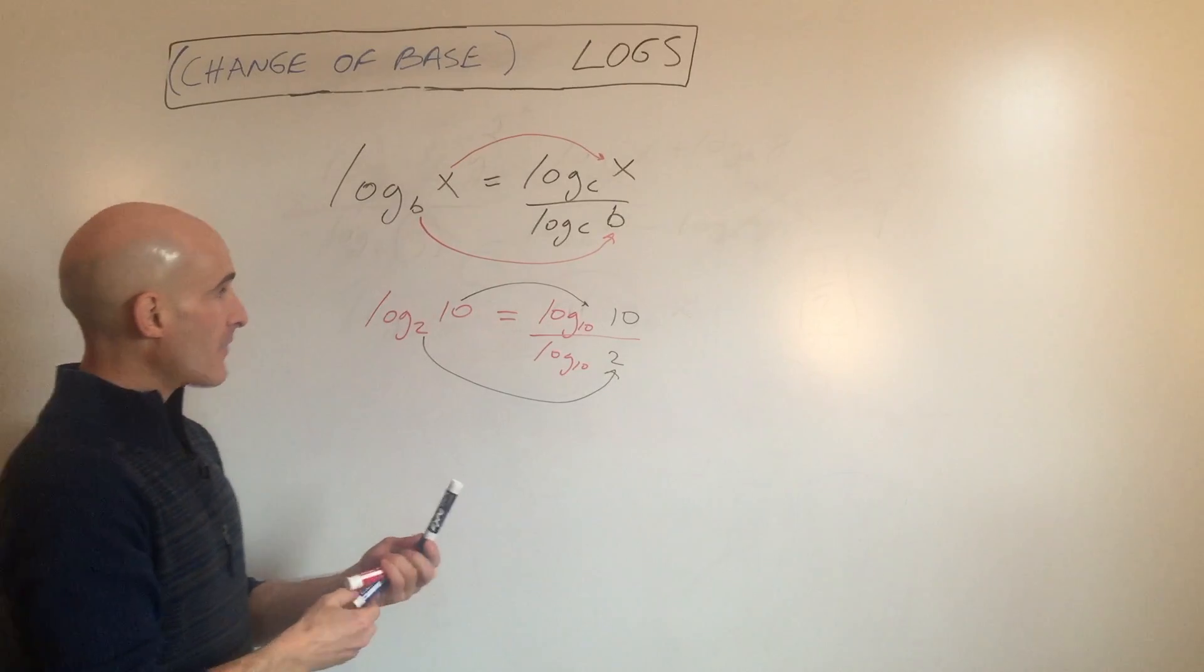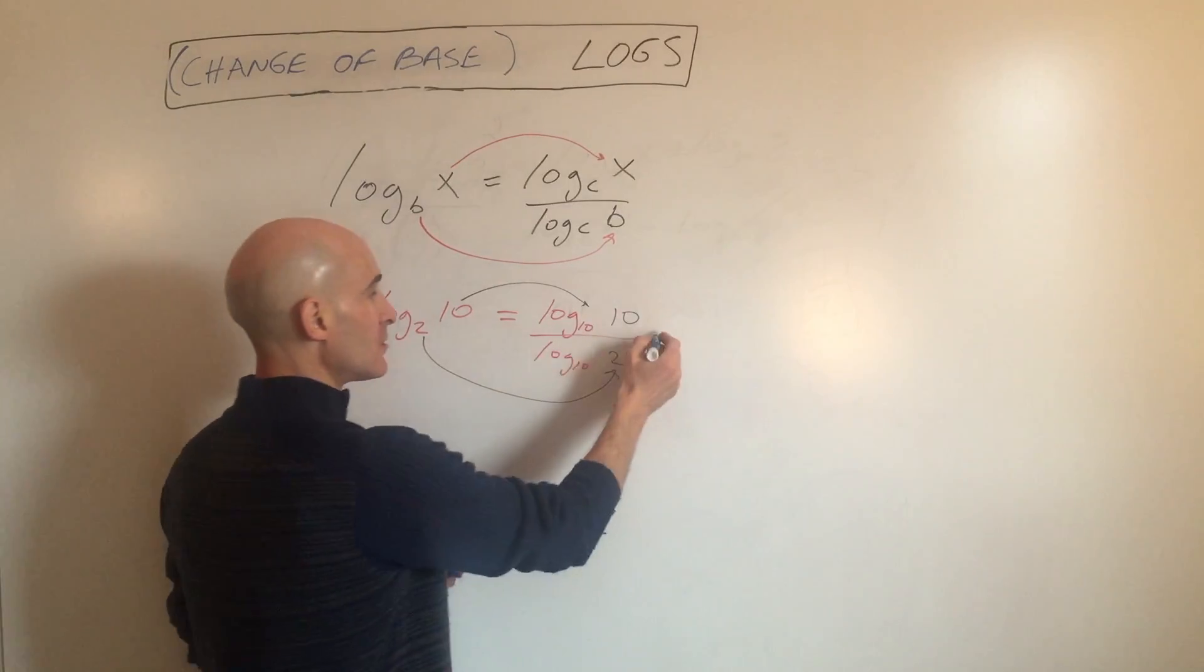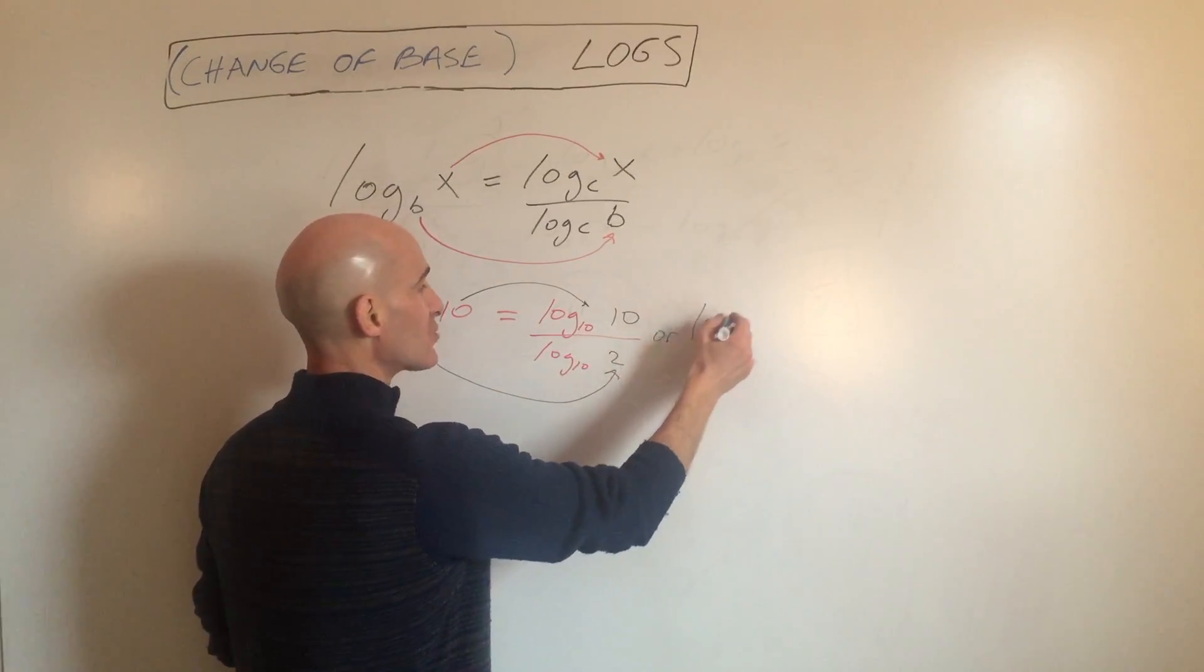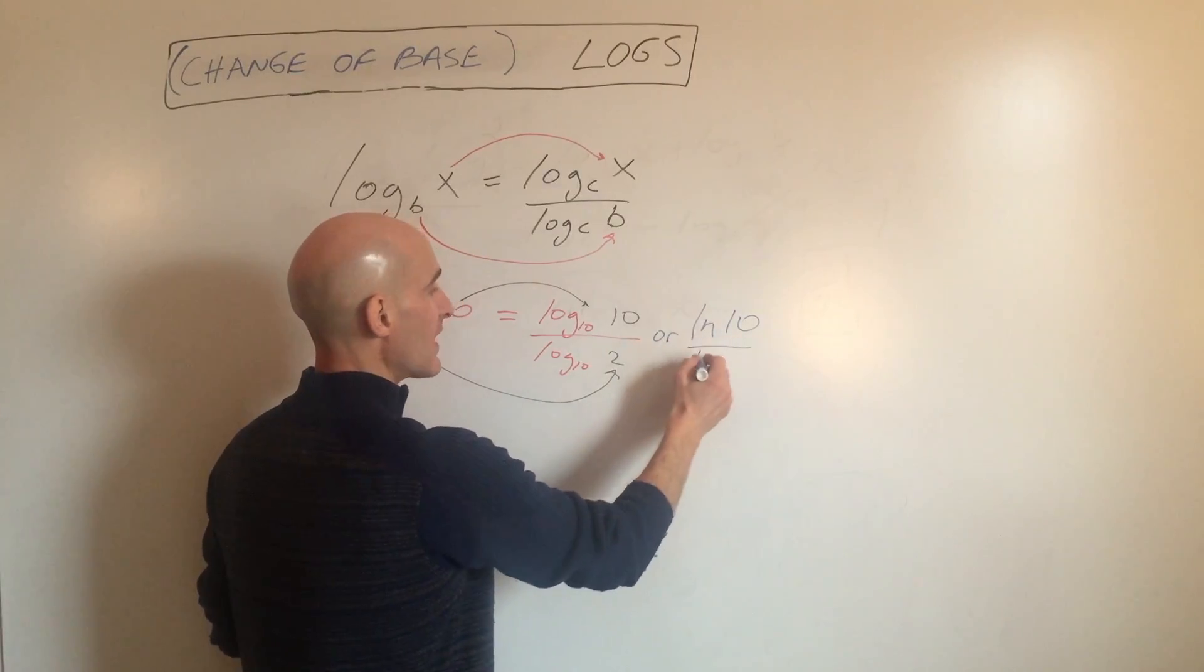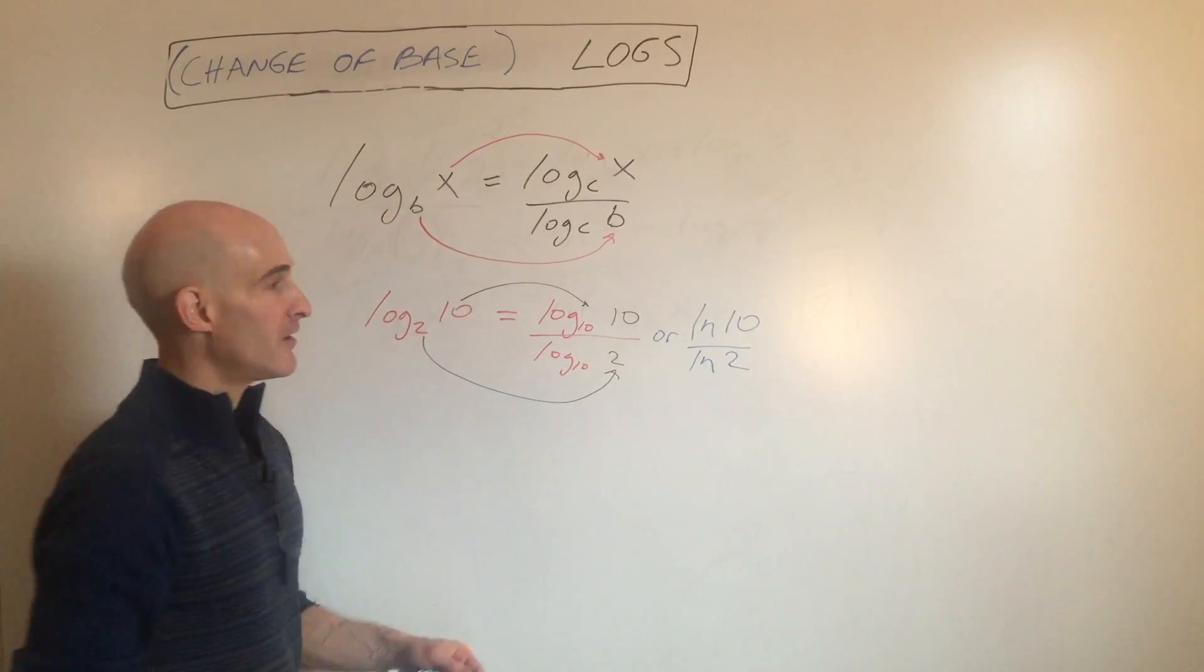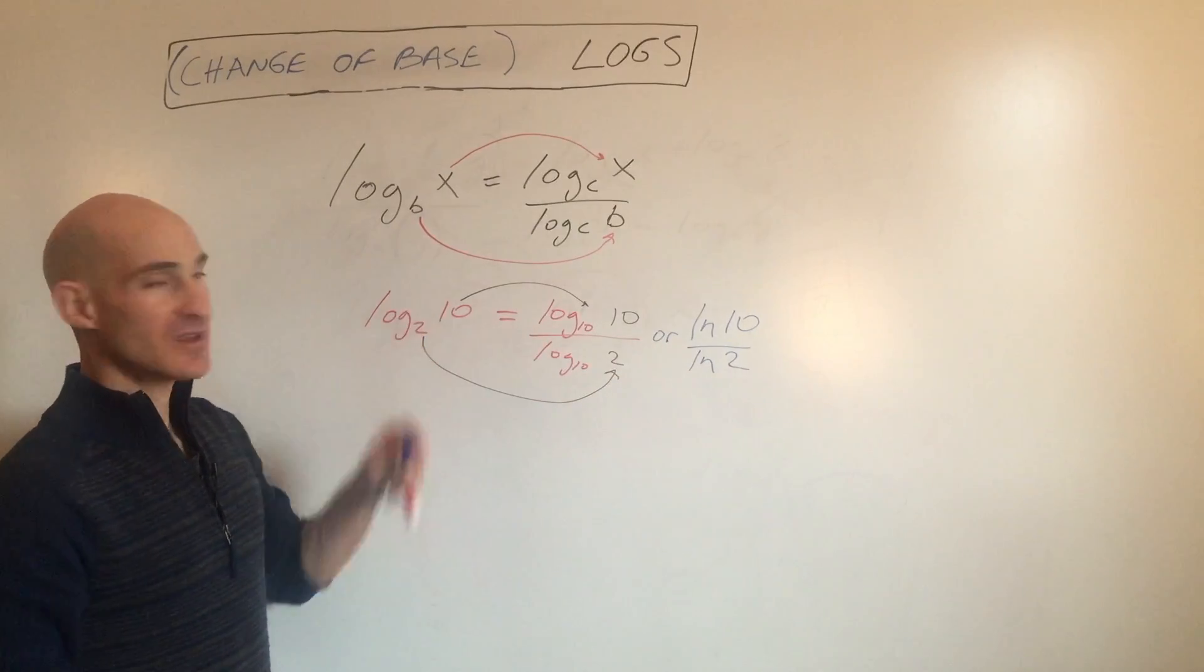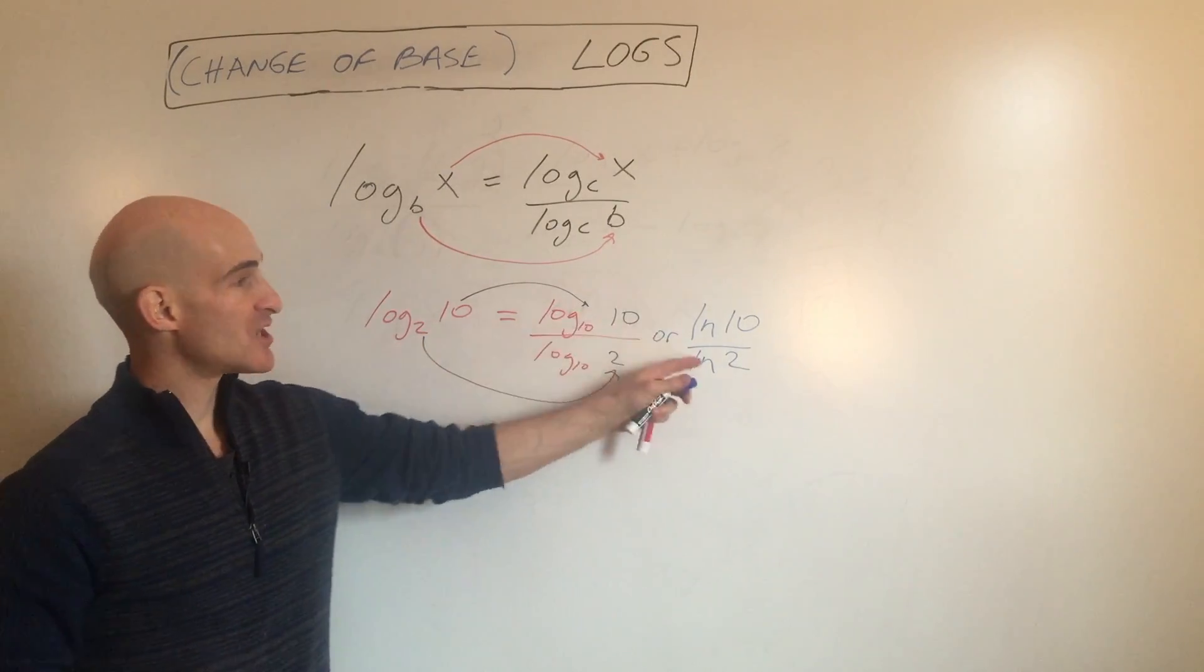Or another option is you could use natural log. So you could do natural log of 10 over natural log of 2. These are all going to be equal to each other. It's just you're changing the base.